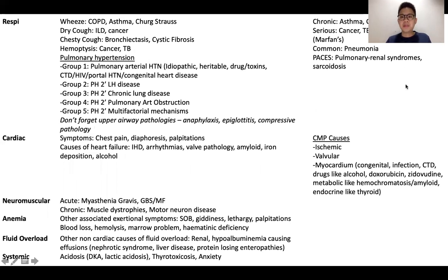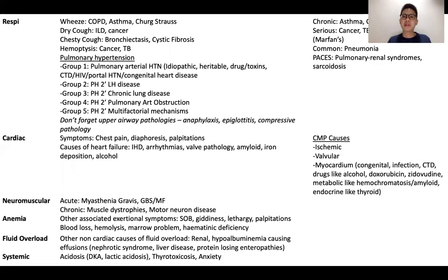This slide is fairly busy, but let's try to dissect it. In terms of respiratory disorders, the symptom-based approach has been discussed. But another way to think of it would be in terms of common conditions, serious conditions, and PACES-specific conditions. Common chronic disorders of breathlessness include asthma, COPD, ILD, and bronchiectasis. Serious ones would include cancer, TB because of its public health implications, PE, and pneumothorax. And for PACES-specific, pulmonary-renal syndrome and sarcoidosis are conditions to consider.